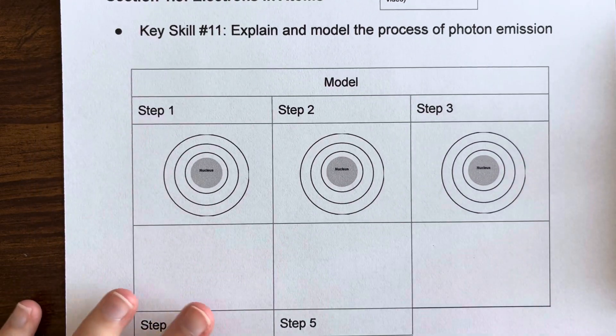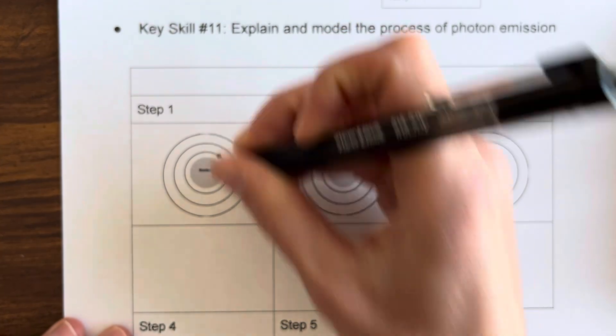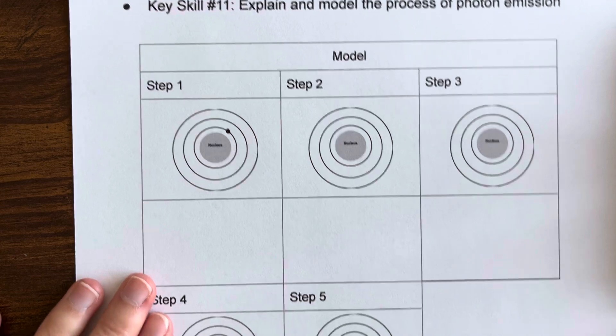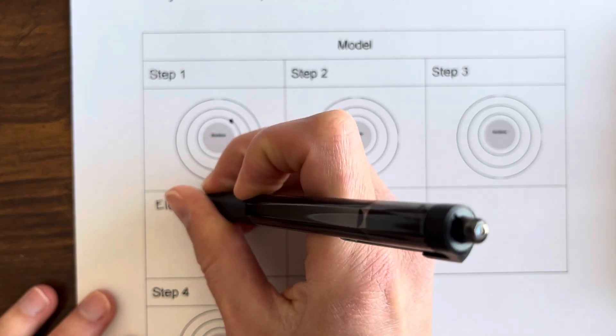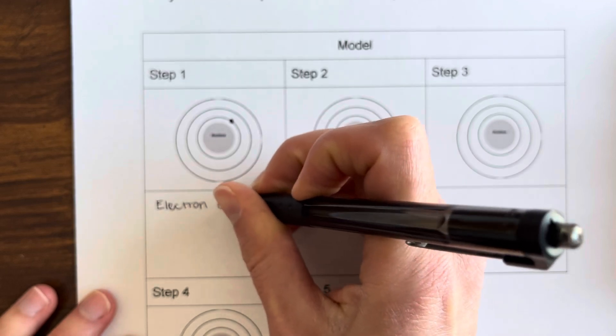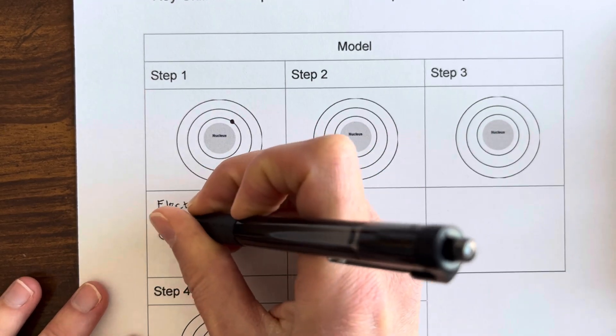So we're going to start with an electron in ground state, which is the energy level that is closest to the nucleus, and we'll just say for our caption here, the electron starts in ground state.